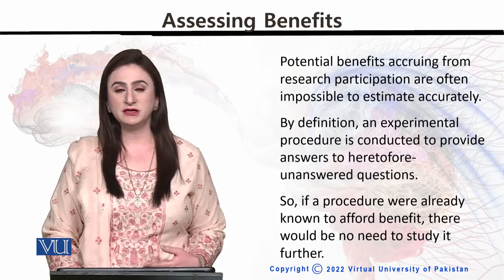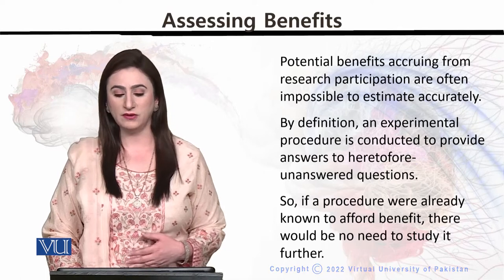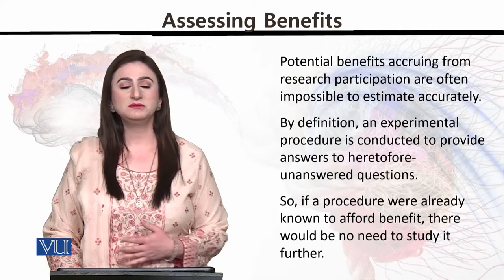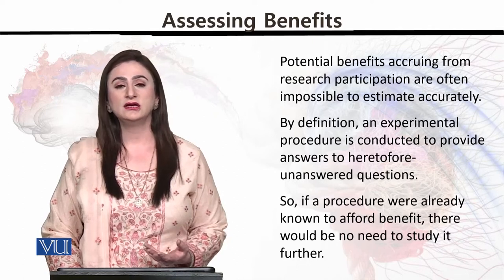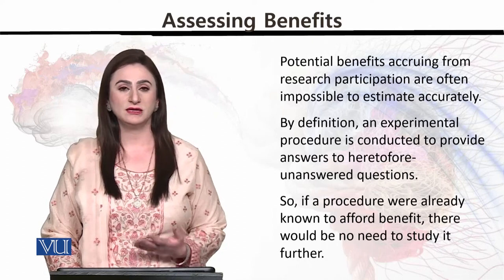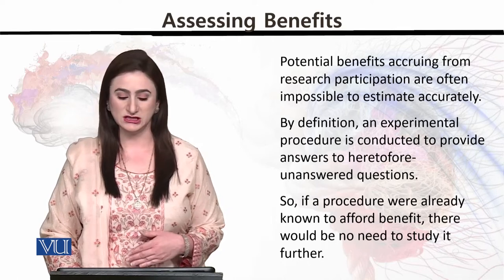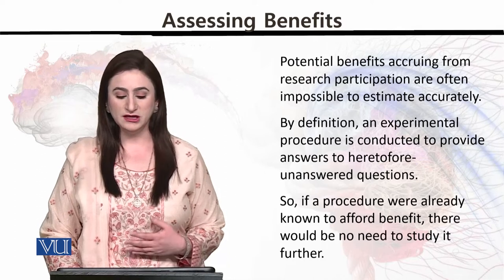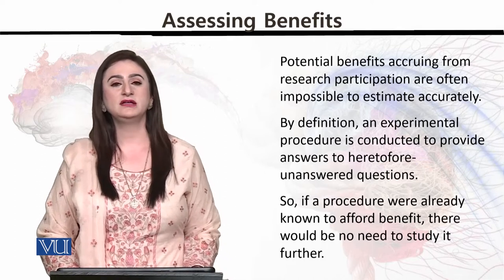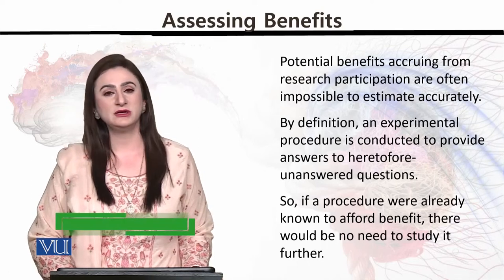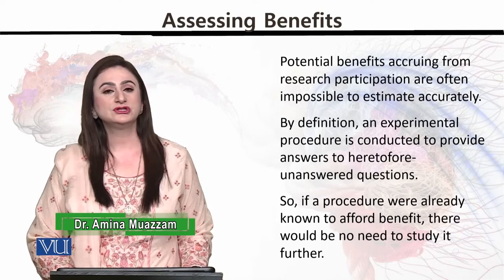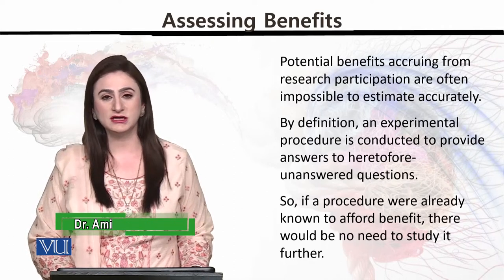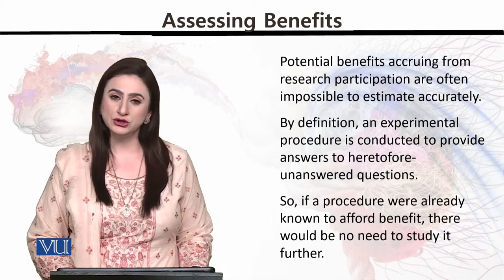By definition, an experimental procedure is conducted to provide answers to hitherto unanswered questions. Basically, we explore so that unseen things become visible to us — so the benefits too can be unseen. So if a procedure were already known to afford benefit, there would be no need to study it further. If we already know all the benefits of an experiment's result, perhaps there would be no need to do that research. So some unknown benefits must always be present for us.